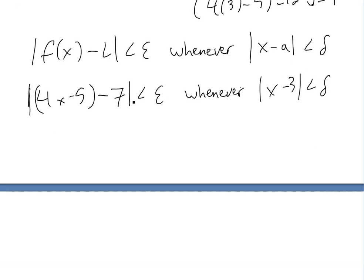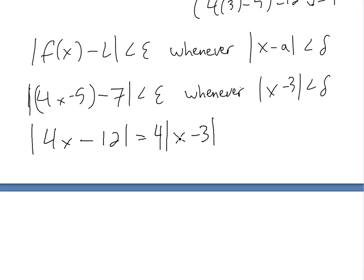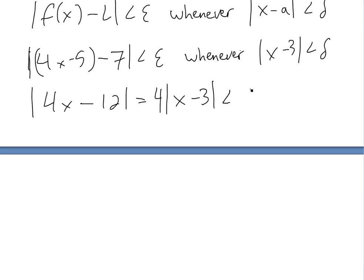So now if we rearrange, we get the absolute value of 4x minus five minus seven. Adding those up gives 4x minus 12, and we can factor out the four: absolute value of 4 times (x minus 3). Since the absolute value doesn't affect the positive factor of four, we have four times the absolute value of x minus 3, which is less than delta.